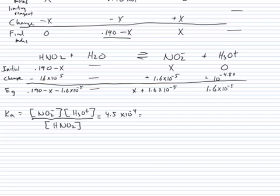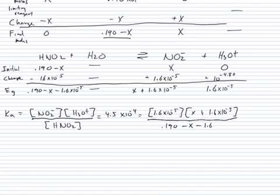So now we are going to plug in all these values into our equation. 1.6 times 10 to the minus 5th times X plus 1.6 times 10 to the minus 5th divided by 0.190 minus X minus 1.6 times 10 to the minus 5th.